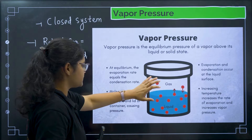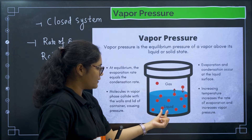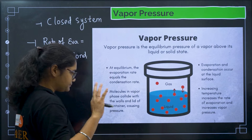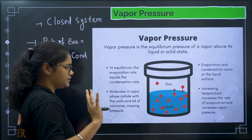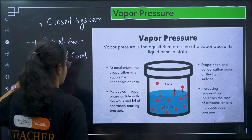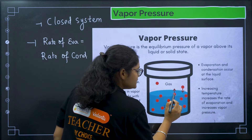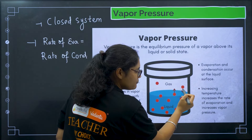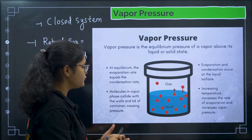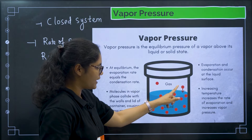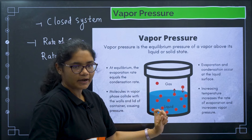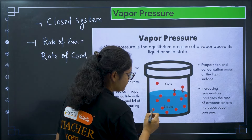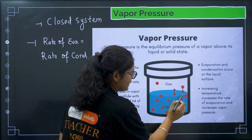Consider a closed container with liquid and red particles. When equilibrium is reached, the number of particles going from liquid phase to vapor phase equals the number coming from vapor phase to liquid phase. In the liquid phase there are 9 particles and in the vapor phase there are 2. One particle goes from liquid to vapor — liquid becomes 8, vapor becomes 3 — then one particle comes back, so liquid returns to 9 and vapor to 2.